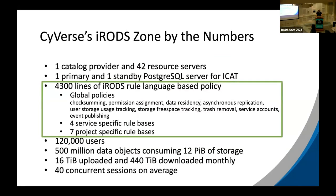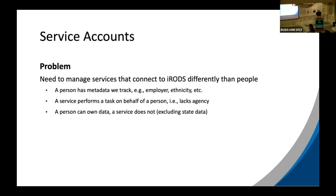Here's an overview of our iRODS zone by the numbers. It's not the largest zone out there, but it is probably one of the most complex, because we have over 4,000 lines of policy and we connect to a lot of things. Along with those 4,000 lines of policy, we support some policies driven by exporting services that we integrate with and external projects.